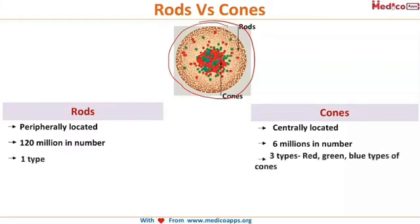There is only one type of rod; however, there are three types of cones depending on the color sensation — red cones, green cones, and blue cones. You can remember from the image also: there are red cones, green cones, and blue cones, however the rods are only of one type.